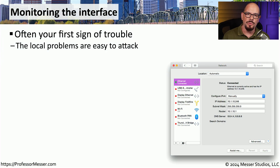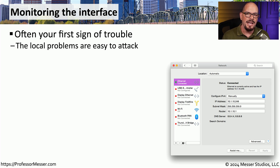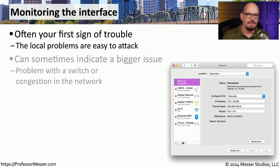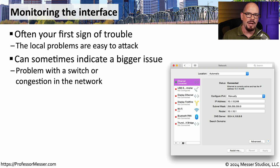Network administrators use a great deal of their time to monitor different interfaces on important devices. This allows us to see any problems that might be developing, either with a bad cable or a bad interface, and we may be able to resolve that problem before it becomes an outage. Sometimes these interface statistics can warn us of congestion or over-utilization on a network, and we may be able to make some decisions about how to change the design of the network to better deal with that over-saturation.